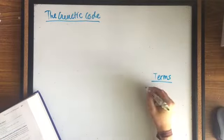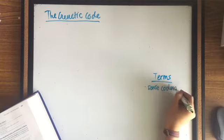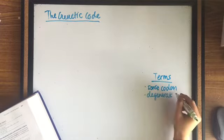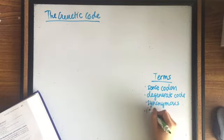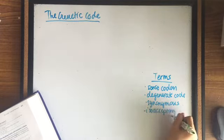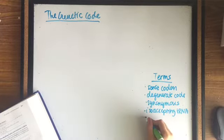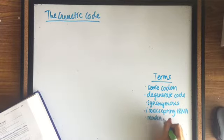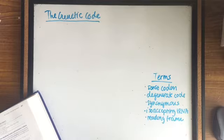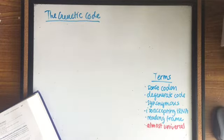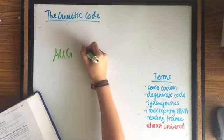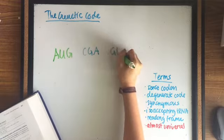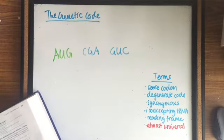Since codons encode amino acids and there are 61 of them, amino acids may be specified by more than one codon which is the degenerate code. Codons that specify the same amino acid are said to be synonymous and different tRNAs that accept the same amino acid but have different anticodons are isoaccepting tRNAs. Each different way of reading the sequence is called a reading frame and the genetic code is almost universal except for in termination codes and mitochondrial genes.